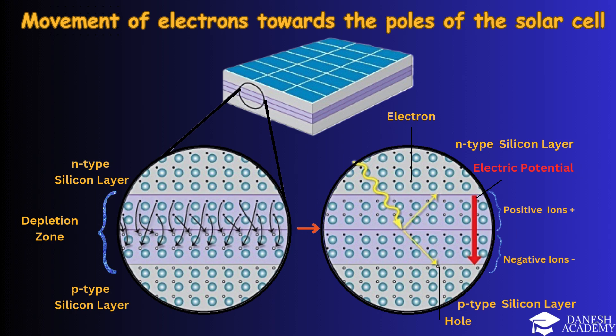Electric field direction: The built-in electric field pushes electrons from the P-type layer toward the N-type layer. This movement ensures that freed electrons are guided toward the negative pole, while holes move toward the positive pole. Electron pathway: As visualized in the close-up, electrons follow a defined path, marked by arrows, from the P-layer to the N-layer and eventually toward the solar cell's external circuit. Poles of the solar cell: The movement of electrons to the negative pole and holes to the positive pole establishes a voltage difference, which is critical for generating current when the circuit is closed.